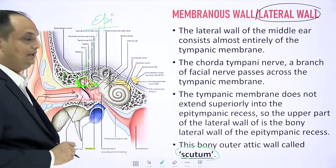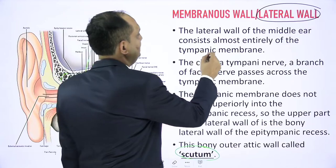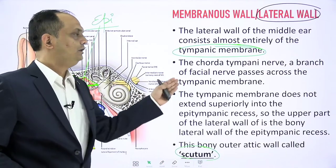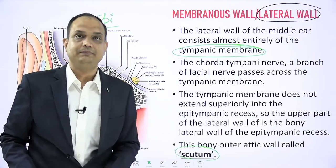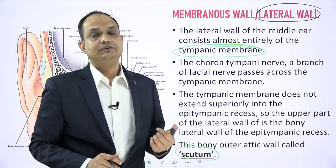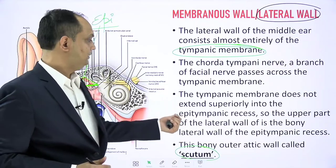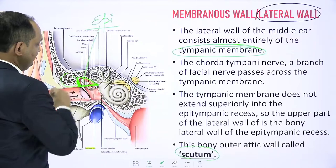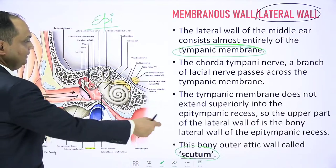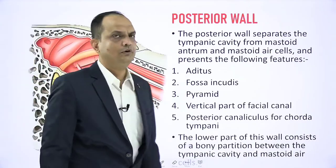The middle ear cavity has an upper part above the level of the tympanic membrane called the epitympanic recess. This epitympanic recess is not lined by the tympanic membrane but by bone, and this bony part is known as the scutum. So the lateral wall is almost entirely formed by the tympanic membrane. The chorda tympani nerve, a branch of the facial nerve, is related to the inner side of the tympanic membrane particularly at the pars flaccida. The tympanic membrane does not extend superiorly into the epitympanic recess.